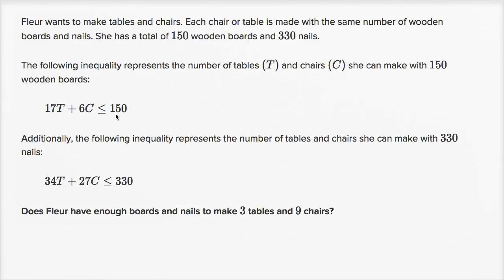We can see the 150 wooden boards right over here. It looks like she uses 17 wooden boards for each table, so the total boards used for the tables is 17T. And she uses six wooden boards for each chair — six per chair times the number of chairs. Adding them together, the total can't be any more than 150, since she only has 150 wooden boards.